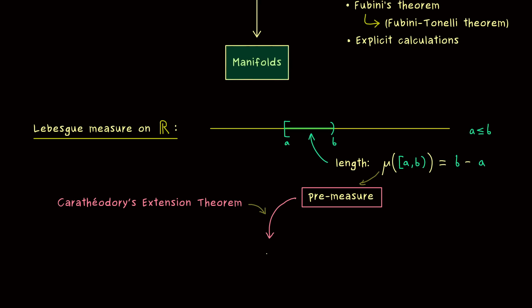It's called Carathéodory's extension theorem and it allows us to extend such a pre-measure. In the first step of this extension, we get a function phi, which is defined on the whole power set of R. So for this function, we can put in any subset of R. And what comes out is either a positive number or the symbol infinity.